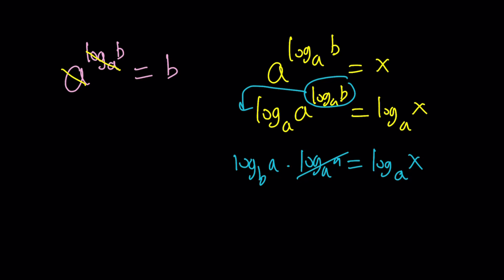That would give you log b with base a times log a with base a, which is 1, so you can cancel it out, equals log x with base a. Oh, by the way, I made a mistake here. This is supposed to be log b with base a.